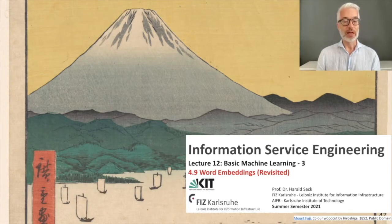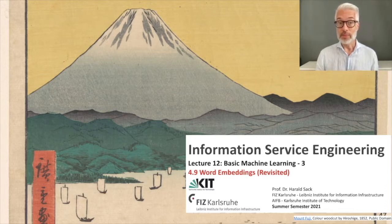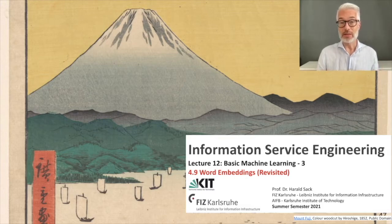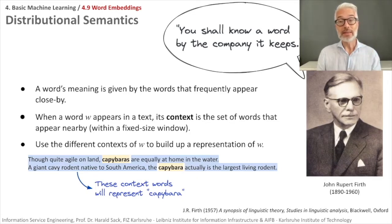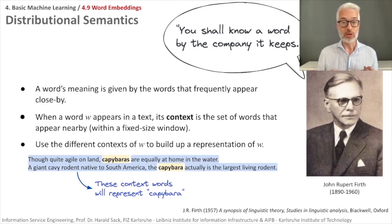This is Information Service Engineering lecture number 12, Basic Machine Learning Part 3. In this section we are talking about word embeddings revisited. You remember in the first part of the lecture when we were talking about natural language processing, we were talking about word embeddings. You shall know a word by the company it keeps — a famous saying of John Rupert Firth. A word's meaning is given by those words that frequently appear close by, so you know a word if you know its context words.